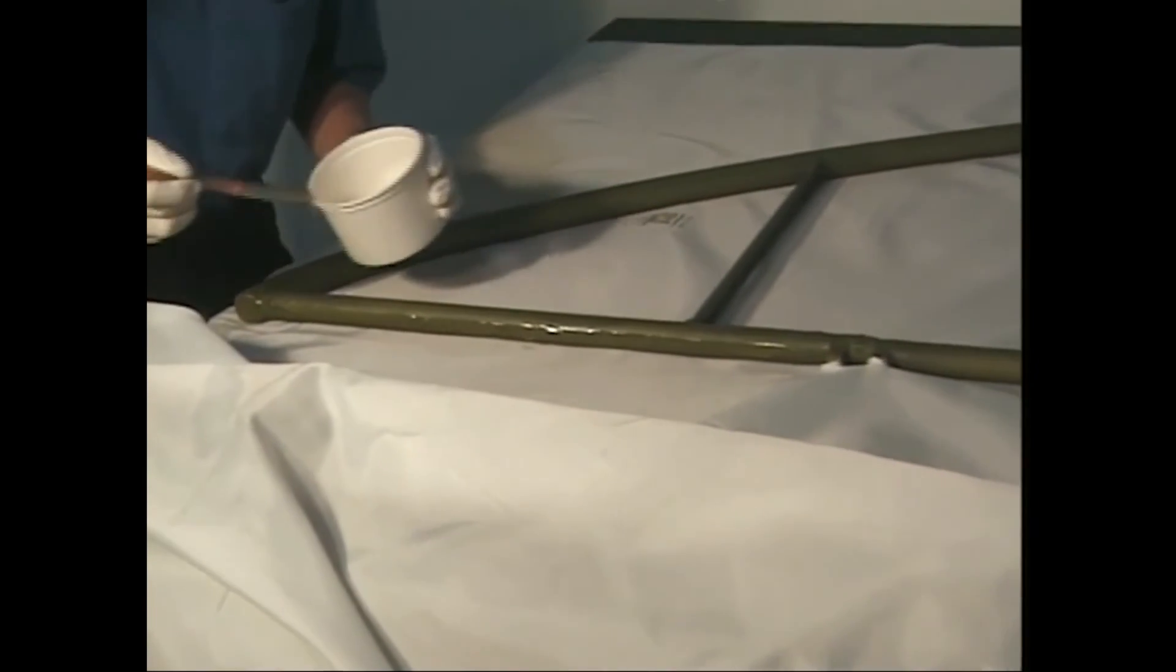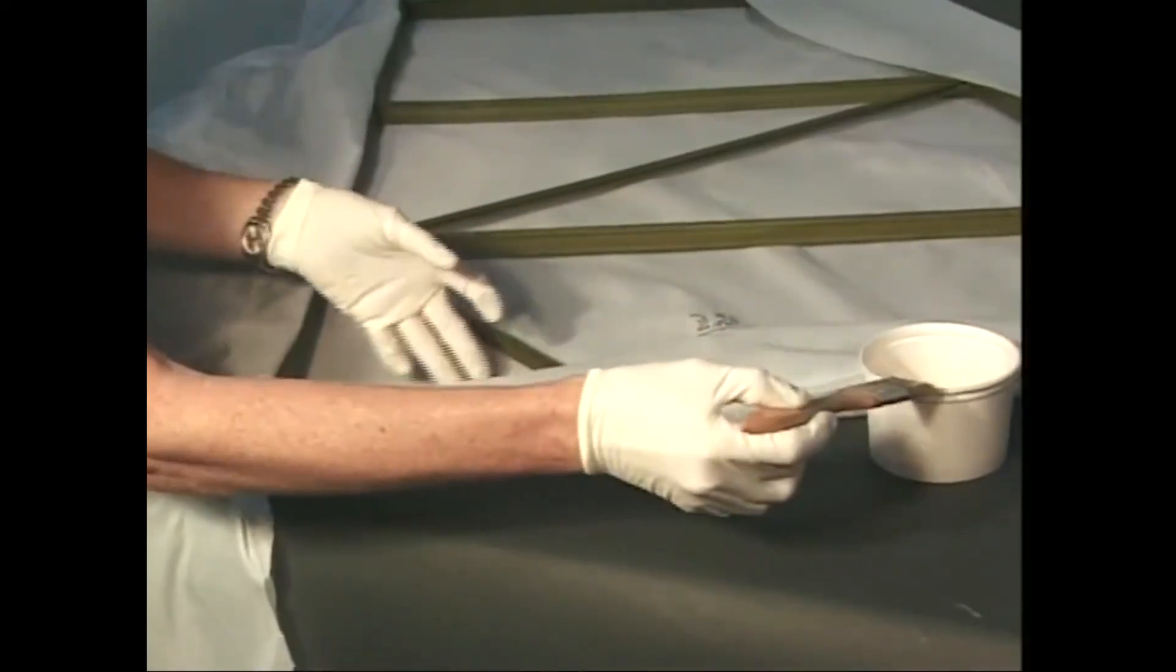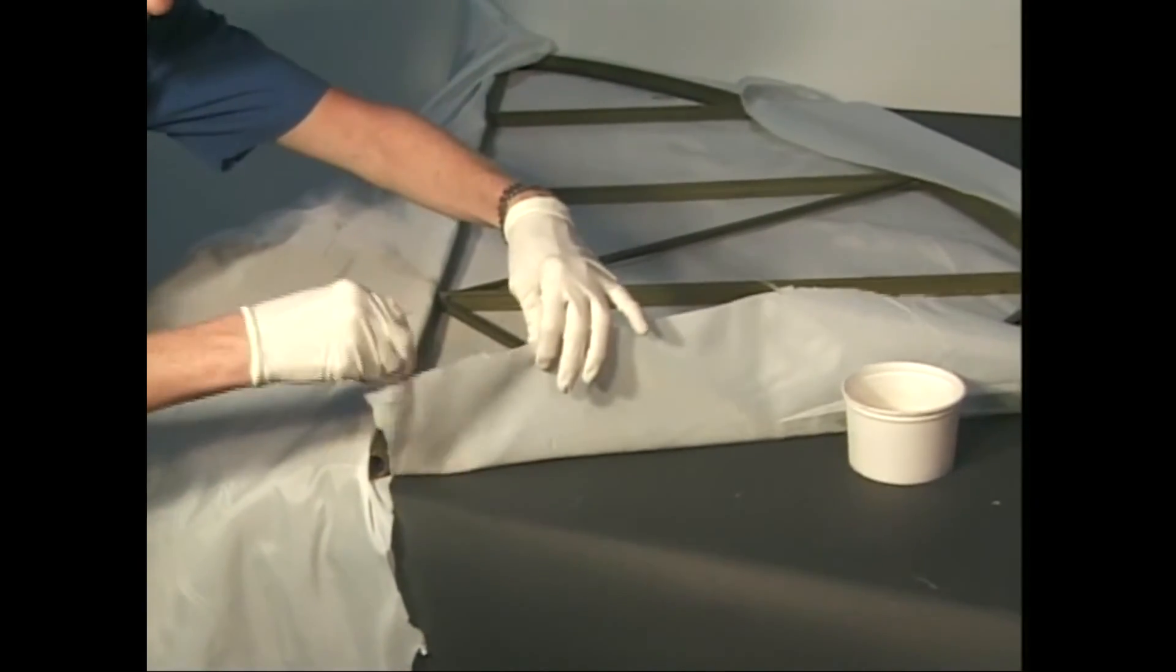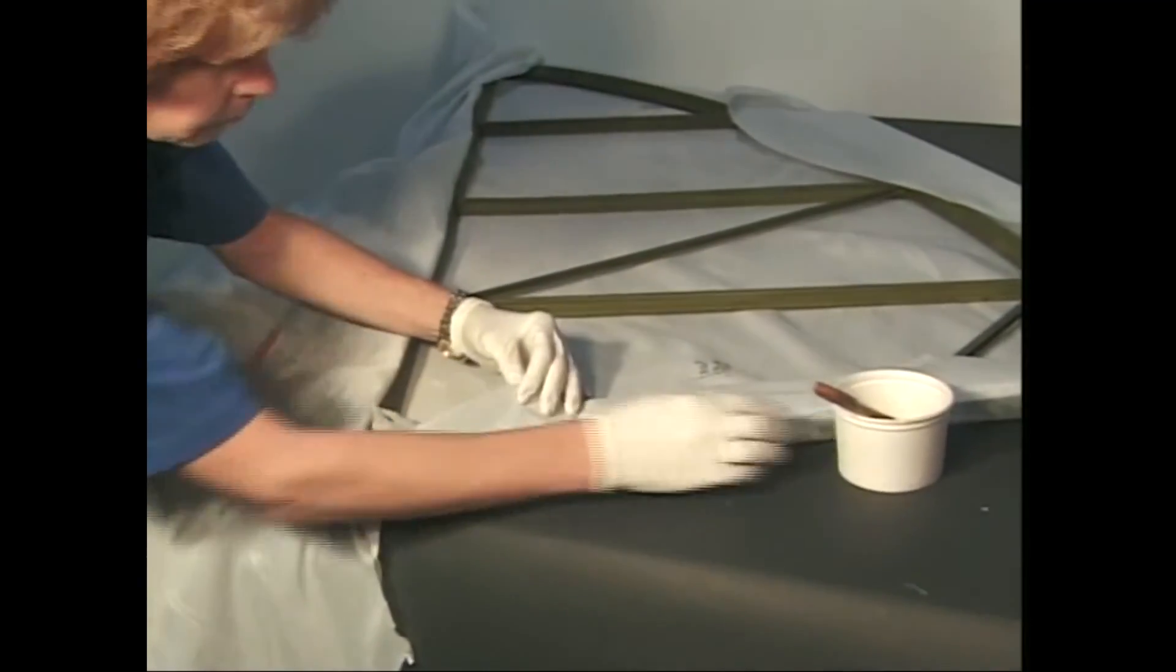Using a little poly-tack, cement the fabric to the straight edge tubing. Lay the stabilizer flat on the table with the bottom of the stabilizer resting on the fabric. Cement the bottom fabric to the straight side of the stabilizer and trim with a sharp razor blade.